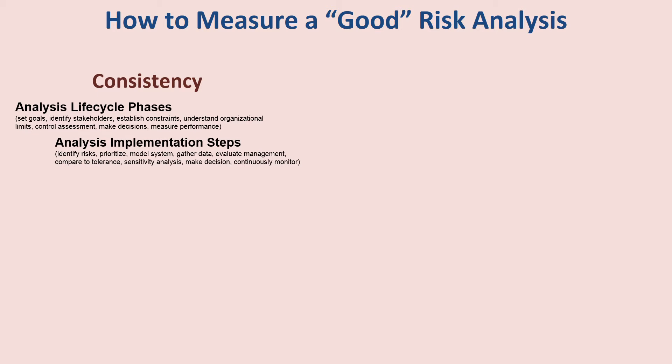How do we know when we've identified all the 'what can go wrong' events? Where do we get the data, and how much do we need? How far down a process do we need to go to verify that we understand probabilities and consequences associated with each risk event? What kind of sensitivity analysis do we do under what circumstances? How are decisions made with respect to the risk analysis? And how do we continually monitor, improve, and iterate the risk assessment?